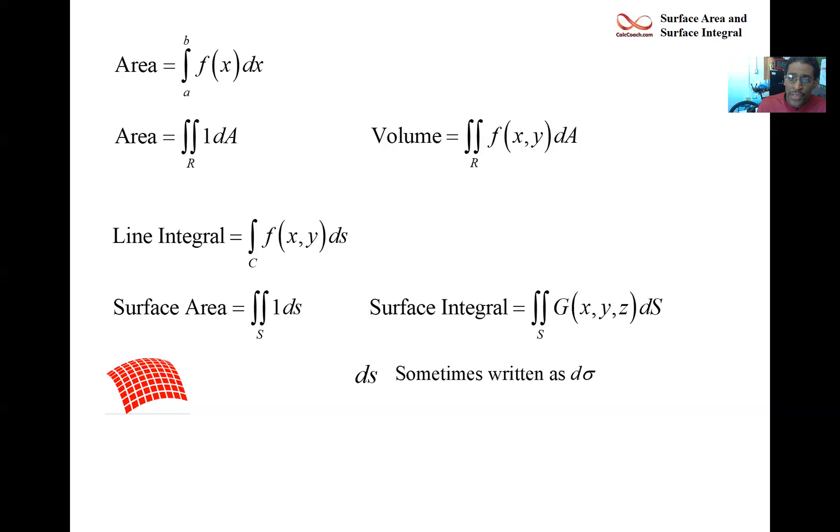Now ds takes on different values depending on how the function comes at you. The formula for ds changes based on how the formula comes at you. If the formula comes at you in a standard way where z is a function of x and y, that's called an explicitly defined function. So ds then is found by taking partials of your function with respect to x and y, squaring, adding one, taking the square root, and that square root gets multiplied by dA, a piece of area. And we'll find that area in the shadow region of the surface in the xy-plane.